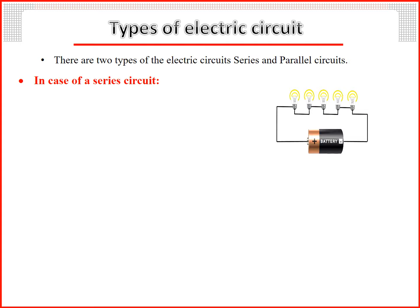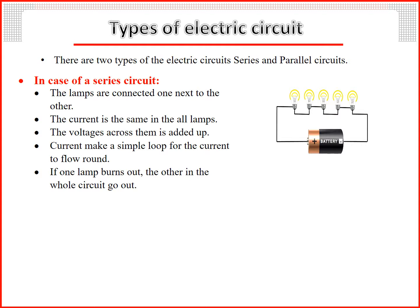In case of a series circuit: The lamps are connected one next to the other. The current is the same in all lamps. The voltages across them is added up. Current makes a simple loop for the current to flow round. If one lamp burns out, the others in the whole circuit go out.